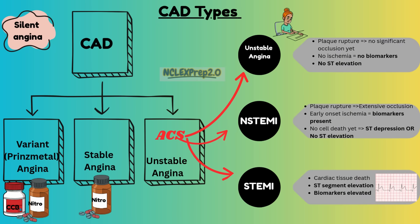Let's classify the types of coronary artery disease. Silent angina — it's very rare but can happen. The patient will be asymptomatic.